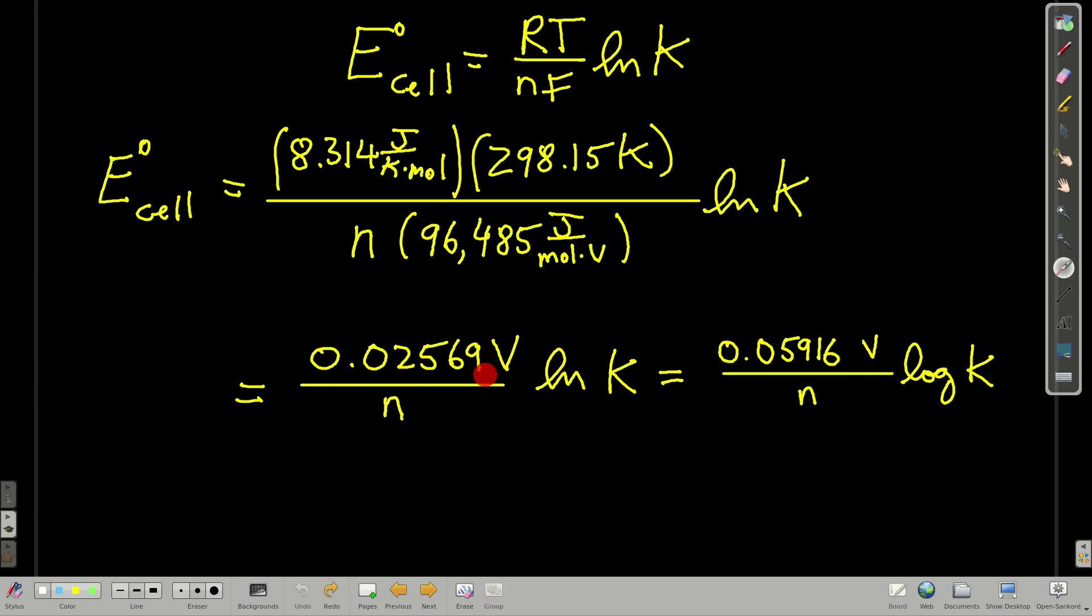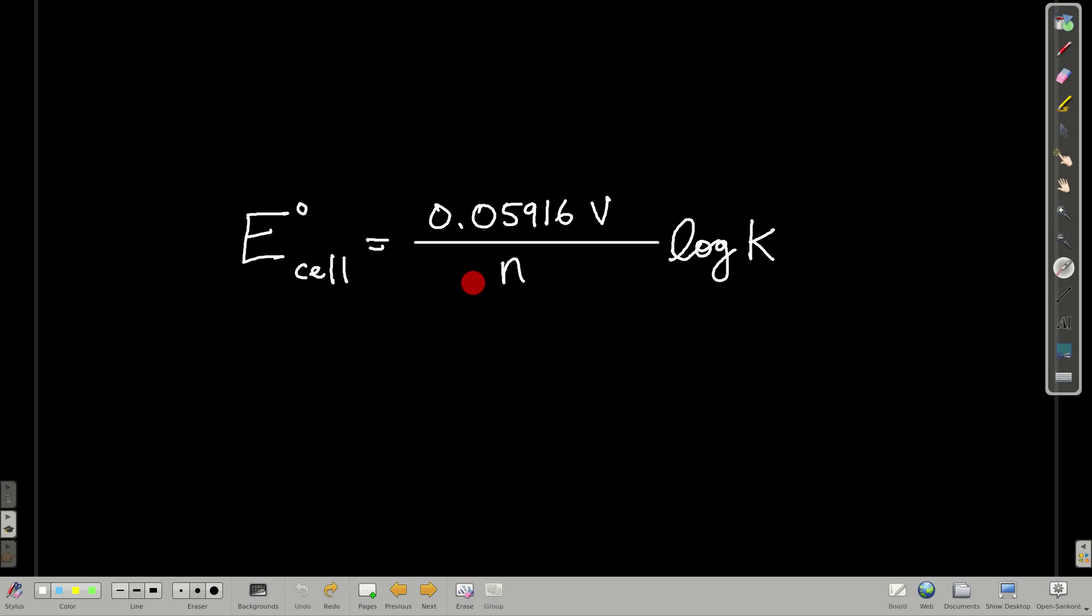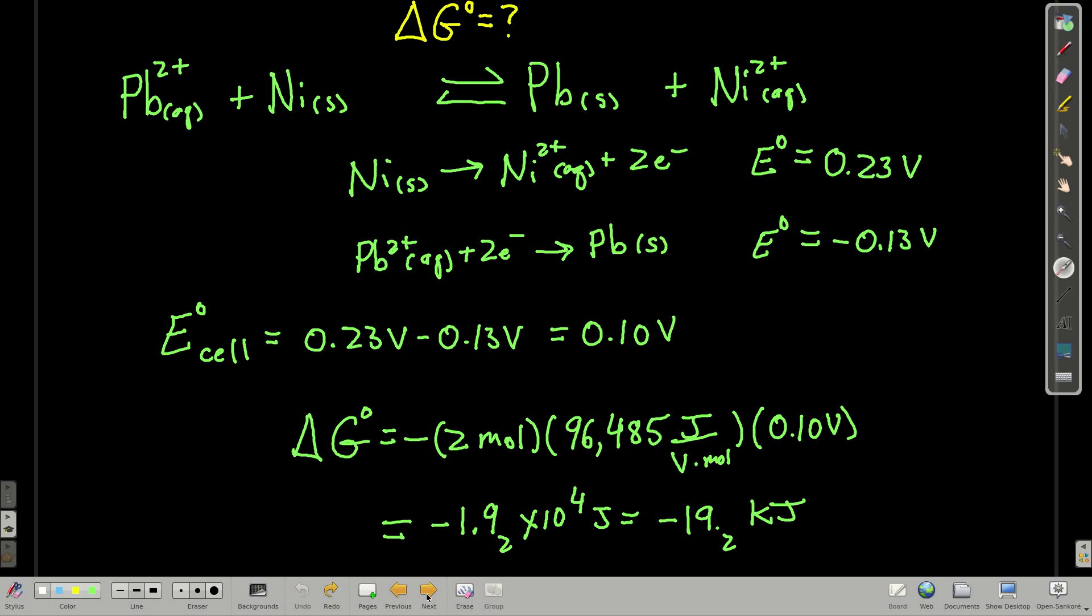A lot of times we write this in terms of log base 10 of the K. It ends up that when you convert between natural log of the K and log base 10 of the K, this number becomes 0.05916 to four sig figs. So we have E zero of the cell is equal to 0.05916 volts over n log base 10 of the K. Remember though, this is only good at 25 Celsius, because we put 298.15 in here. Good one to know.